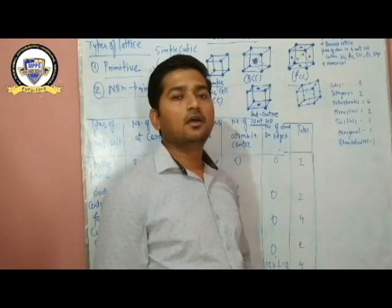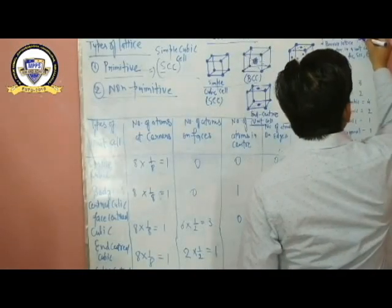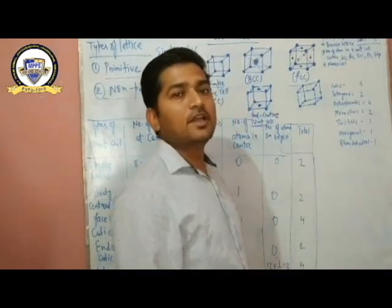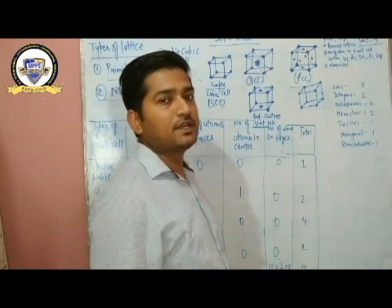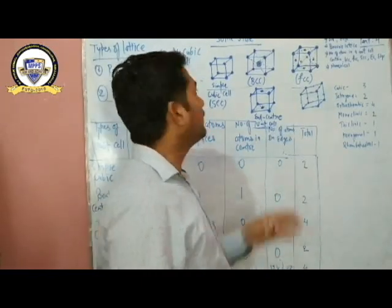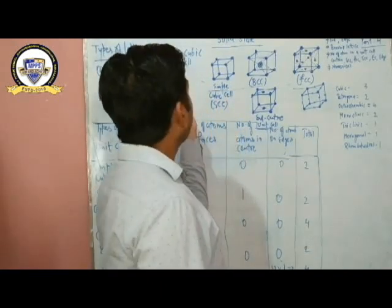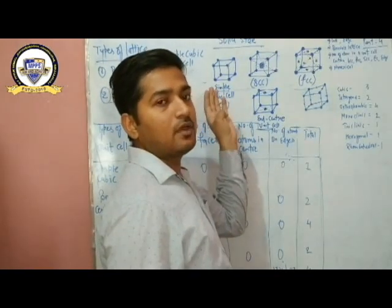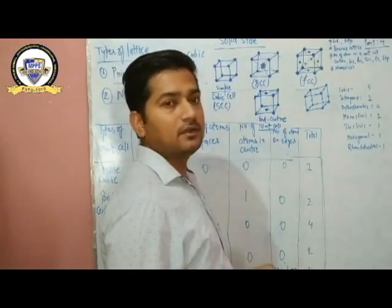Good morning. Today we start lecture number 4. In lecture number 3, we discussed about the different types of unit cells present in different crystal lattices. On that basis, we already discussed about the primitive — that means simple cubic cell — and the non-primitive types: body-centered cubic, face-centered cubic, and end-centered.